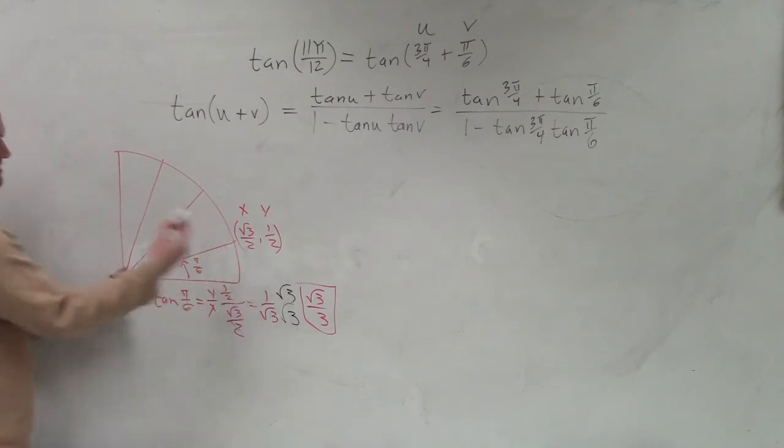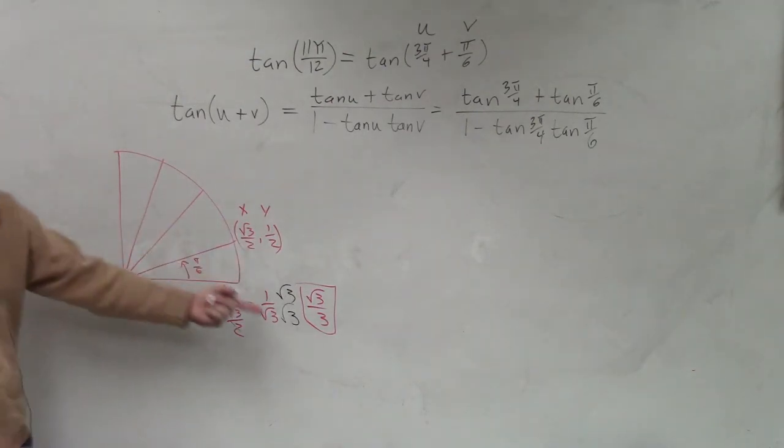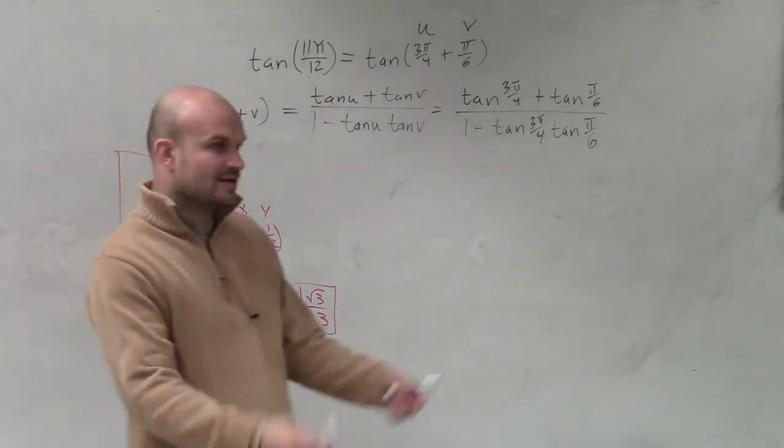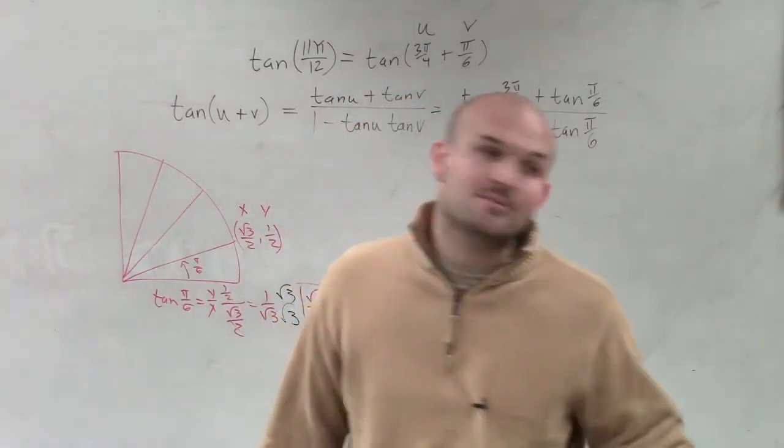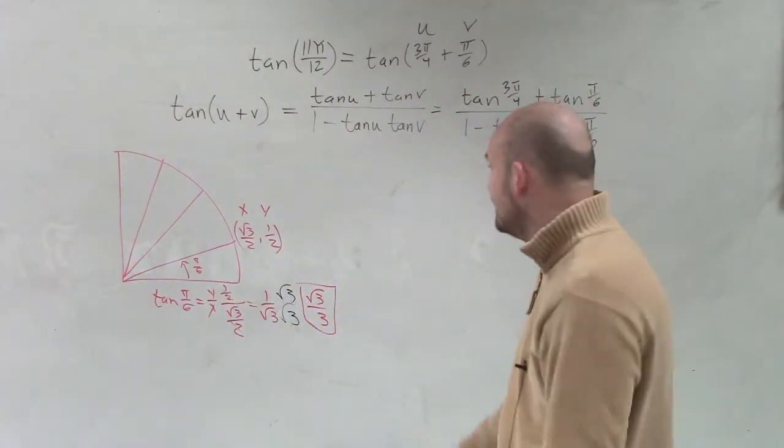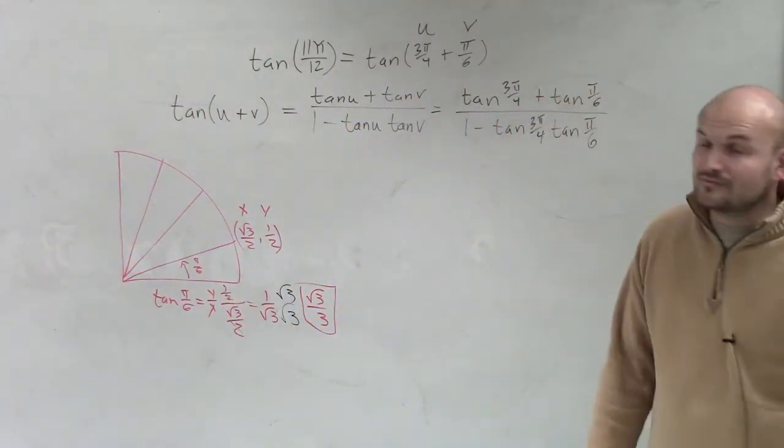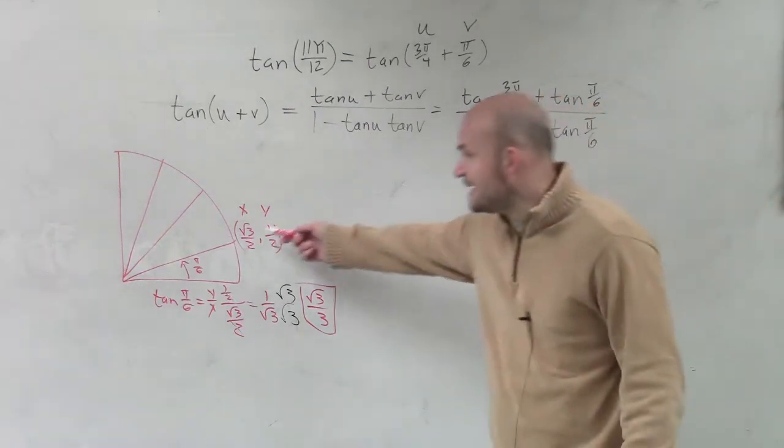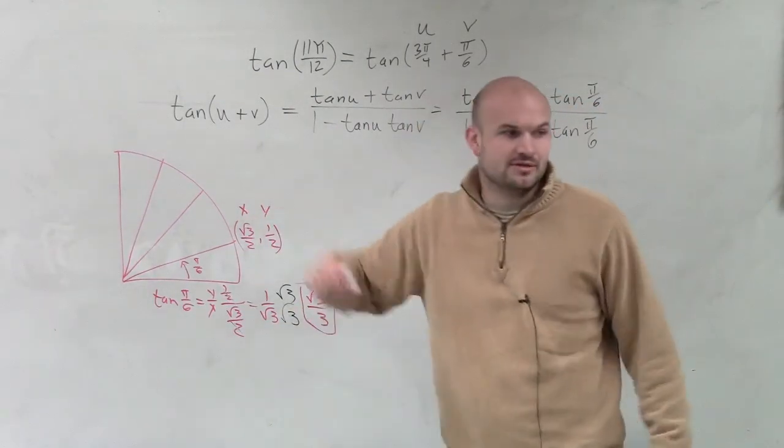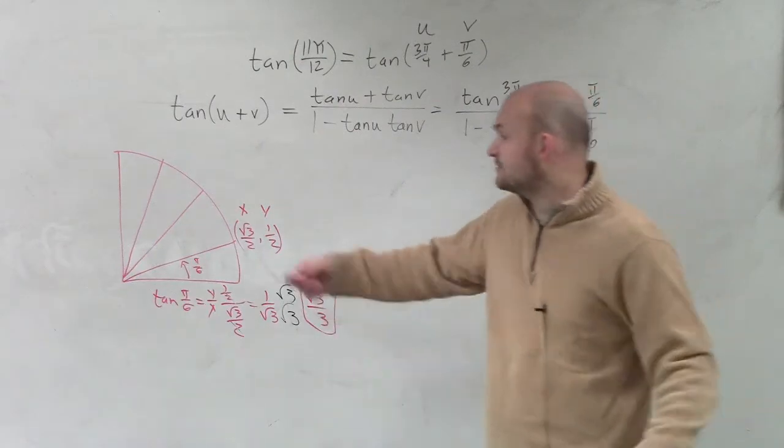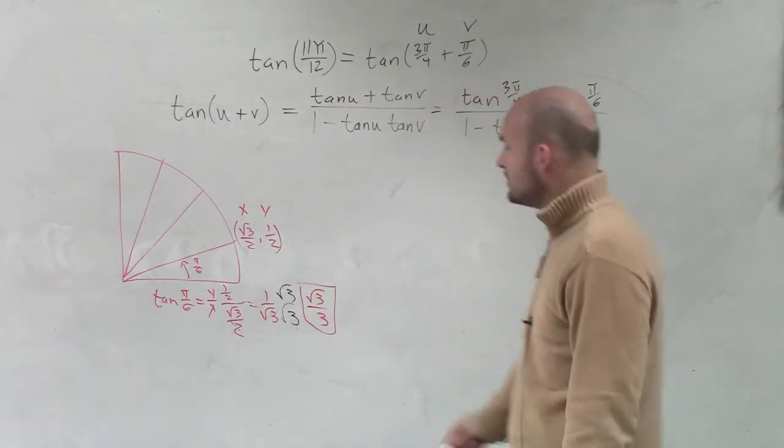If it was 5π over 6, it's the same thing, just in the second quadrant, therefore it's negative. If it was 7π over 6, it's the same thing, but in the third quadrant, so it'd be negative. And if it was 11π over 6, it'd be the same point, but in the fourth quadrant would be positive, because it's negative over negative.